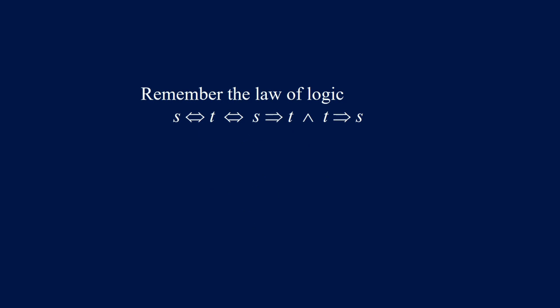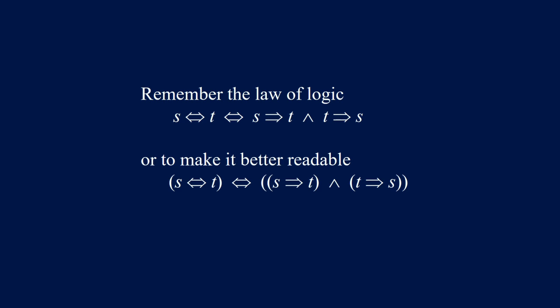Now recall this law of logic about equivalence: S equivalent to T is equivalent to (S implies T) and (T implies S). To make it better to read, we put brackets: open bracket S equivalent to T close bracket, is equivalent to open bracket open bracket S implies T close bracket and open bracket T implies S close bracket close bracket.